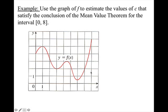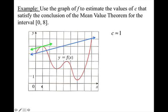Let's try an example: use this graph of f to estimate the values of c that satisfy the conclusion of the mean value theorem for the interval from 0 to 8. Take your ruler and draw the secant line from 0 to 8. Then slide it up and down, keeping the same slope, and sketch all of the lines where it would be tangent. Sliding it up, you'd have a tangent line right about here, approximately c equals 1. Sliding it down, you'd see tangent lines at approximately 3.2, 4.5, and 6.1.